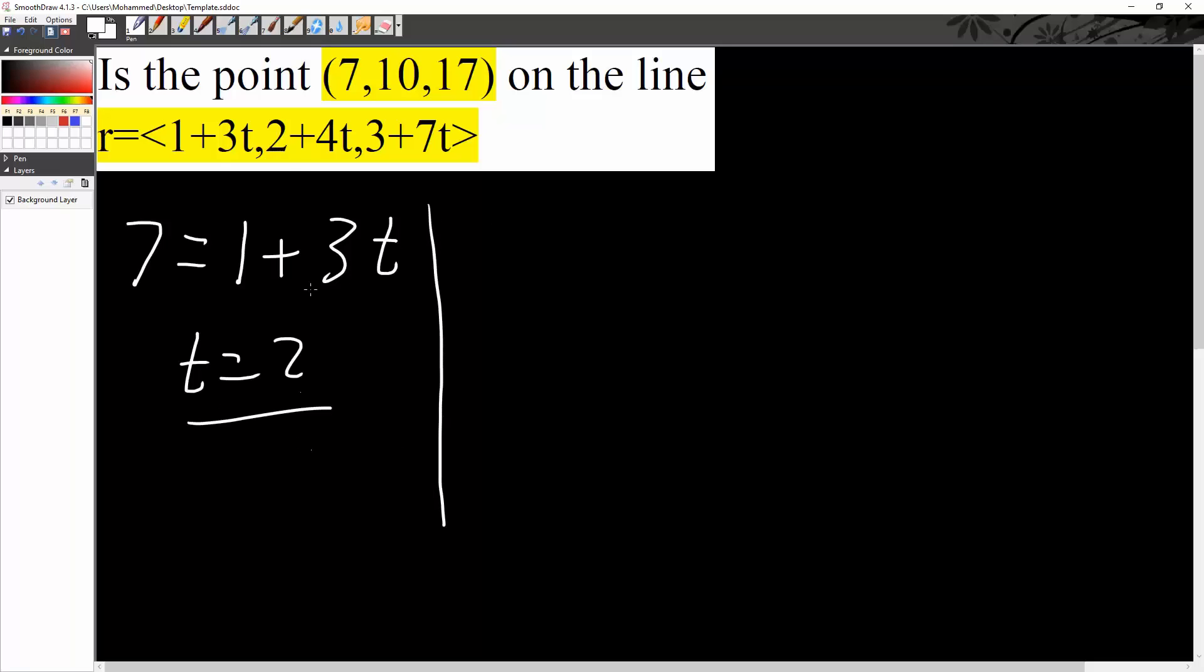Now we're going to check 2 for the other 2 points. So we have 2 plus 4 parentheses 2. What does it equal? Likewise, 3 plus 7 parentheses 2. What does it equal? So 4 times 2 is 8, 8 plus 2 is 10. 10 works here.